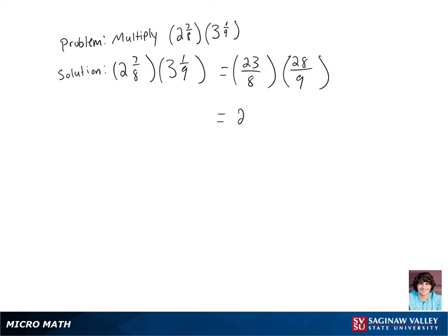Now we're going to multiply our numerators and our denominators across, but let's rewrite 28 as 7 times 4, and let's rewrite 8 as 4 times 2 so that we can do our simplifications here. We can cancel a 4 off the numerator and the denominator.